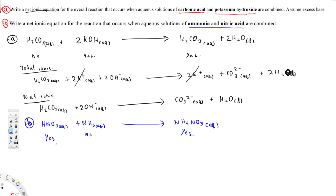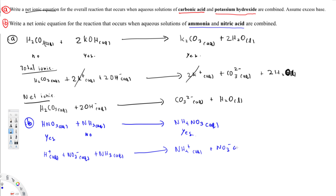So NH₃ remains the same on the left side, and HNO₃ separates into H⁺ aqueous plus NO₃⁻ aqueous. NH₃ aqueous stays as is. On the right side, NH₄NO₃ dissociates into NH₄⁺ aqueous plus NO₃⁻ aqueous. This gives us the total ionic equation.